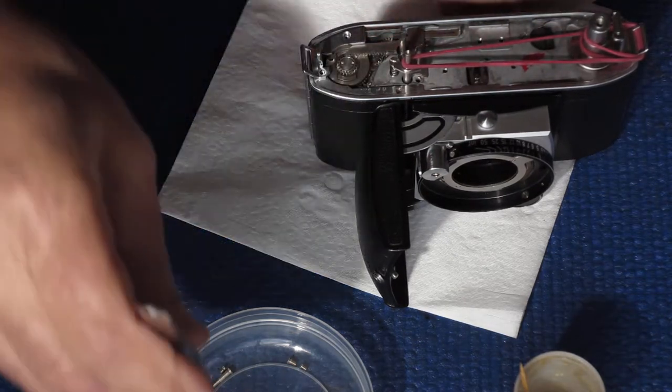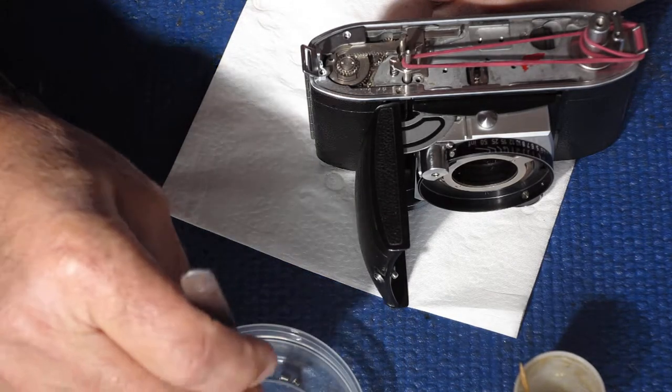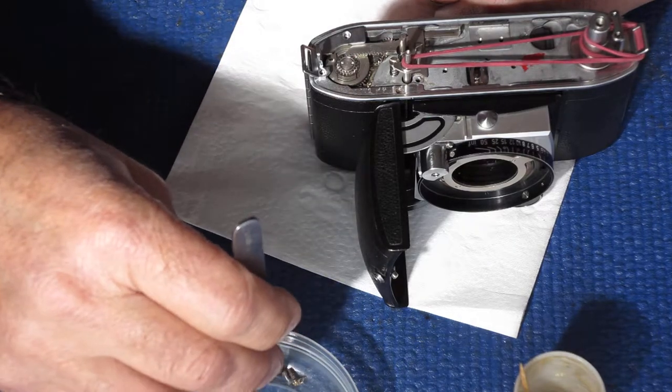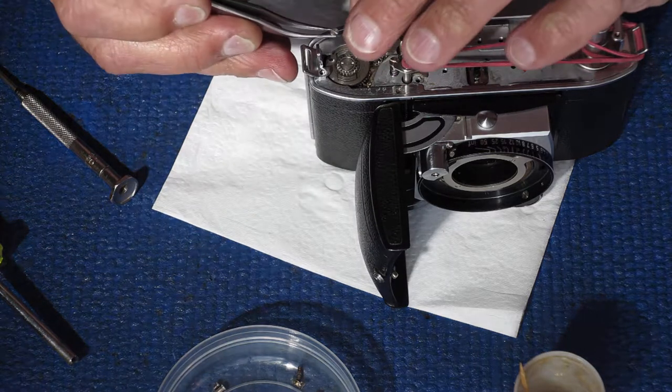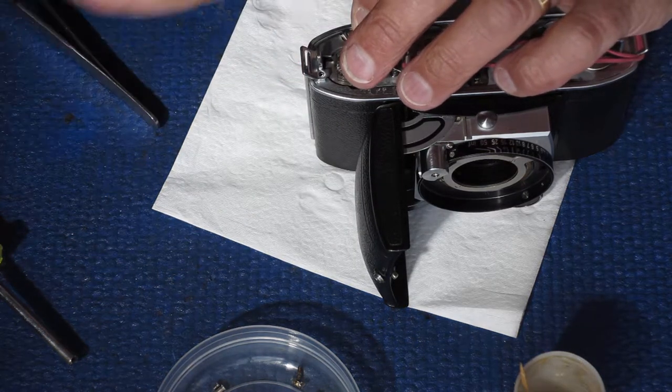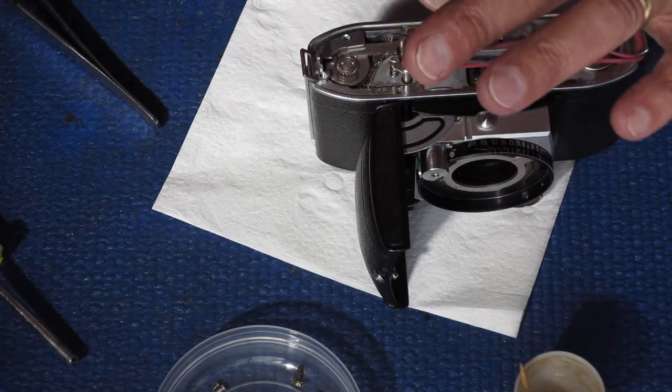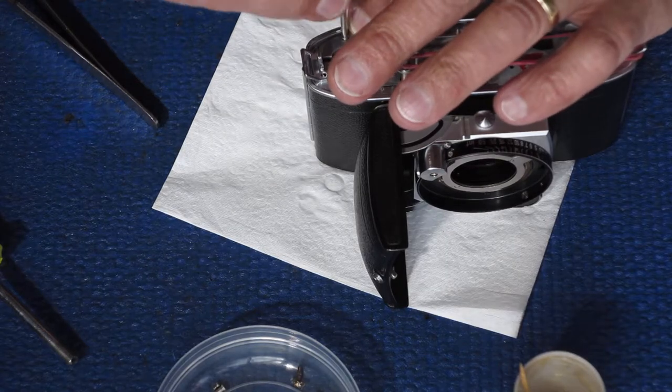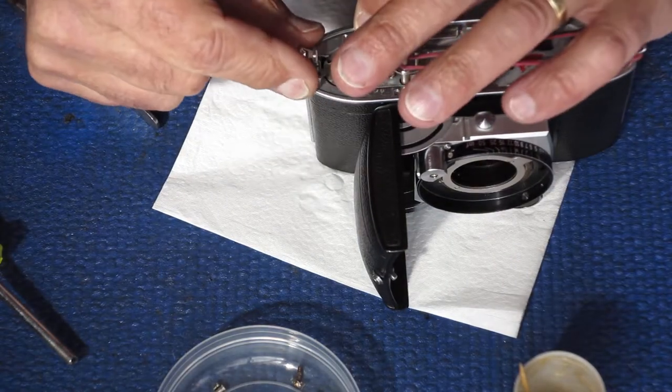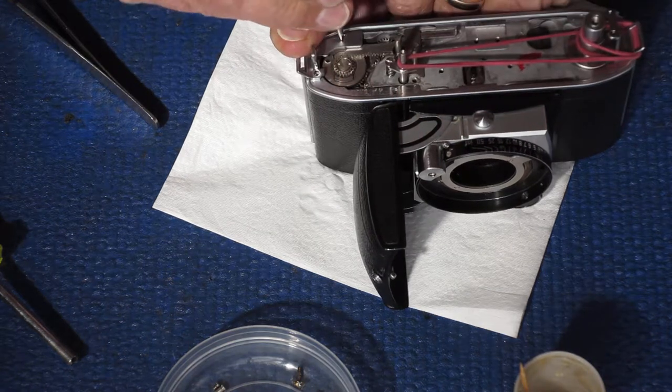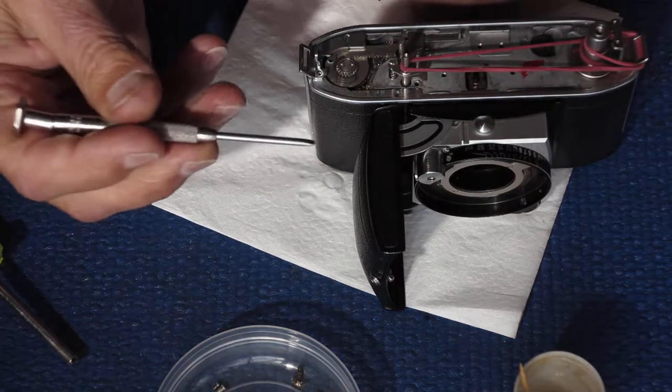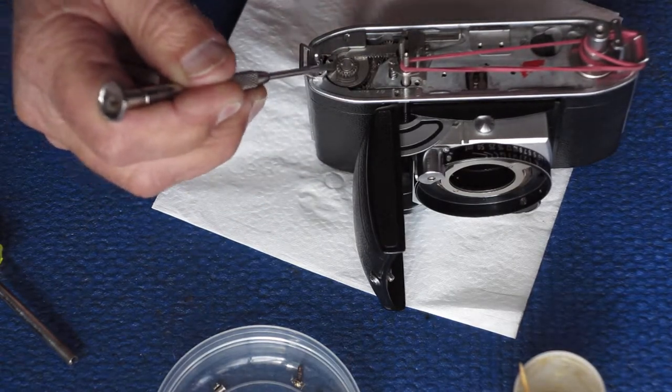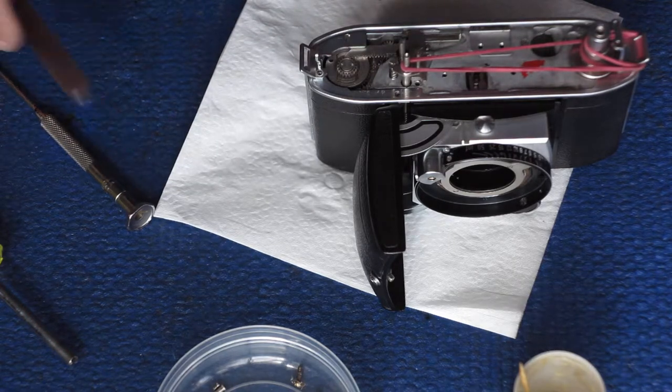Two screws here. One of them, the countersunk screw goes there. And the other screw I want, I don't immediately, oh I know why I don't immediately see the other screw. It's because it was missing. Somebody had taken this screw from here and put it here. The original screw from here was gone. Right, back in a second.